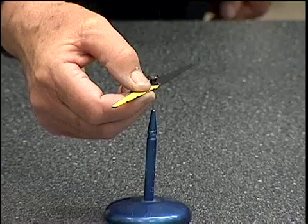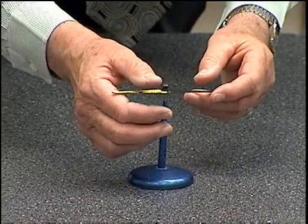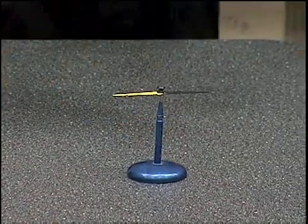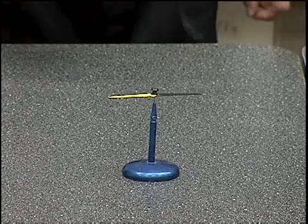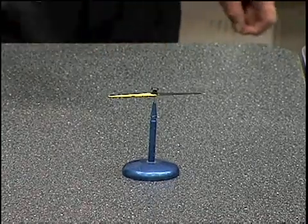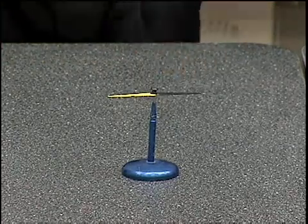Here I have the compass needle on this pin, and it tends to line up in the direction of the magnetic field of the Earth, or whatever magnetic fields might be surrounding it. The Earth's magnetic field is dominant in this case, and it lines up so that this black end points toward the north.